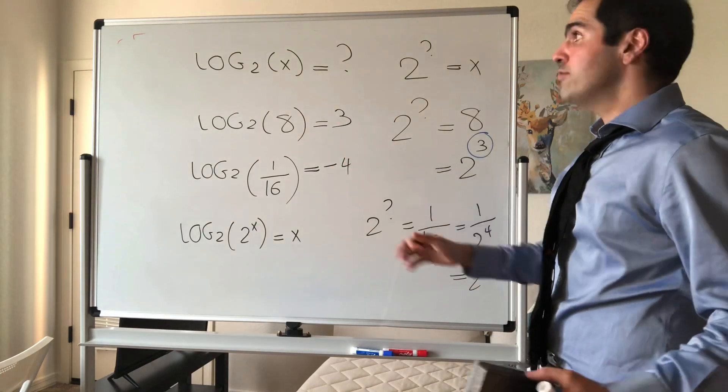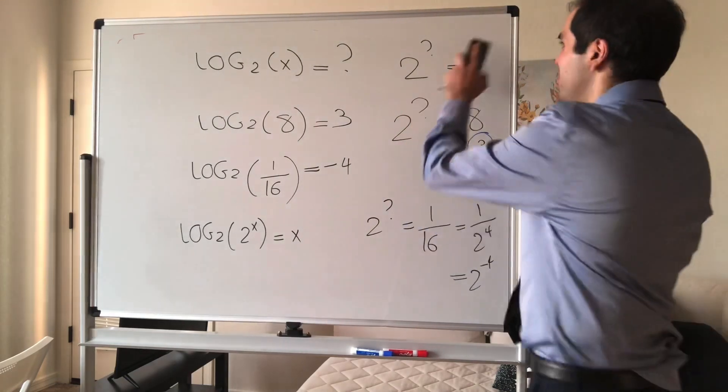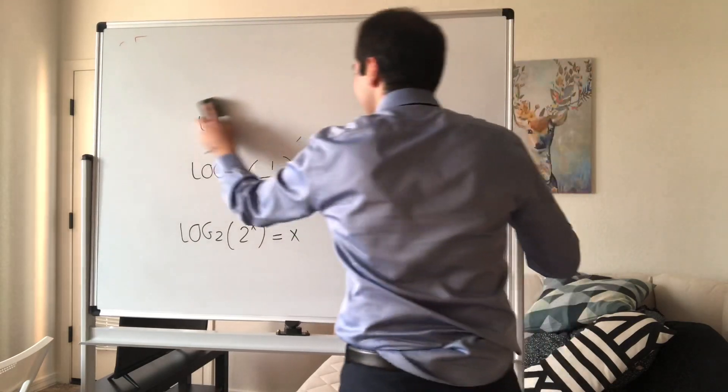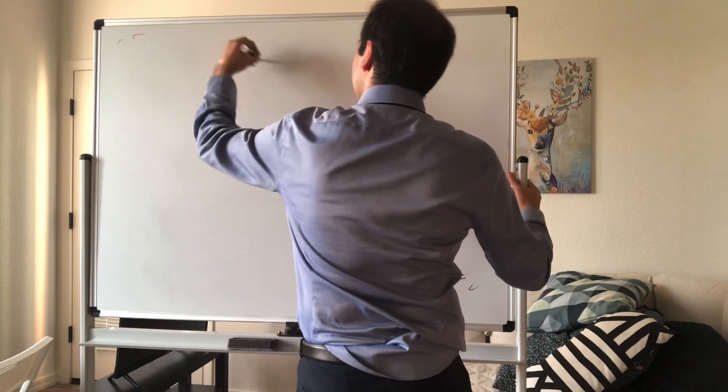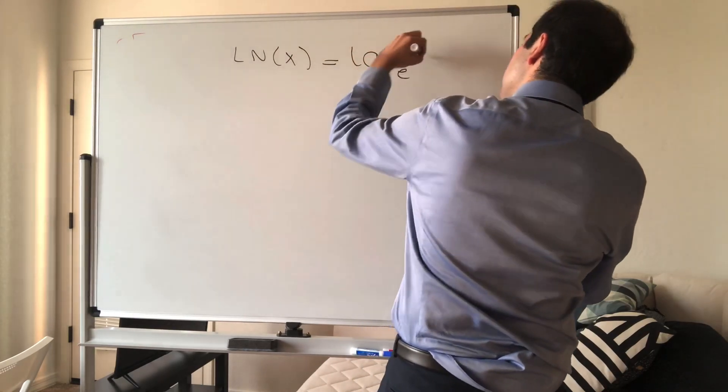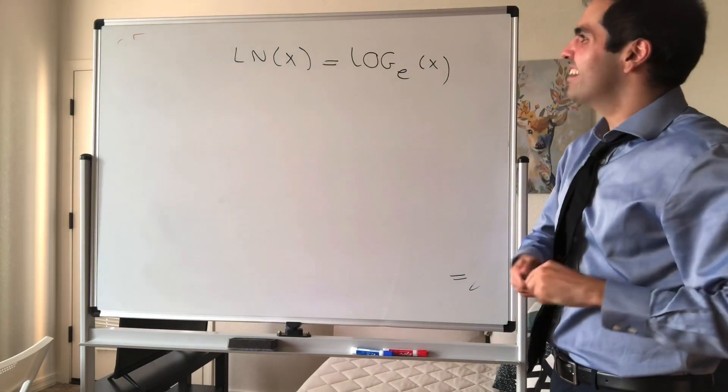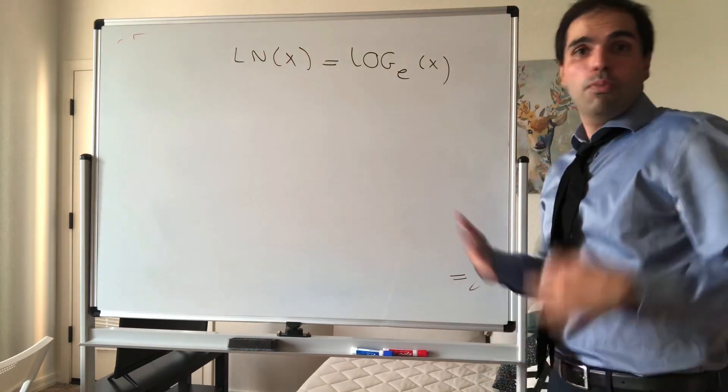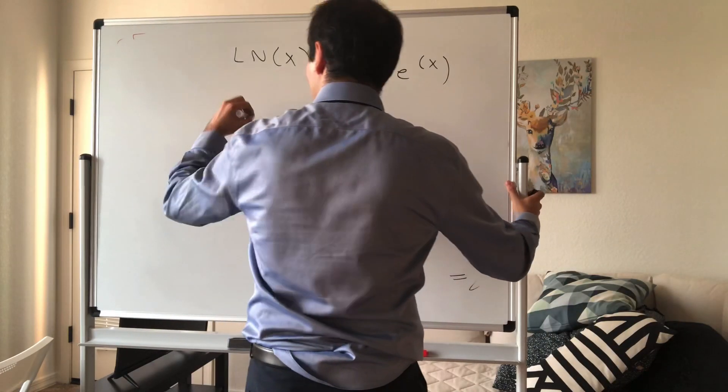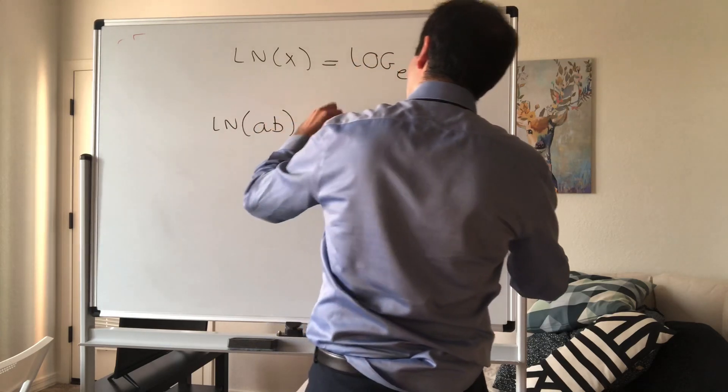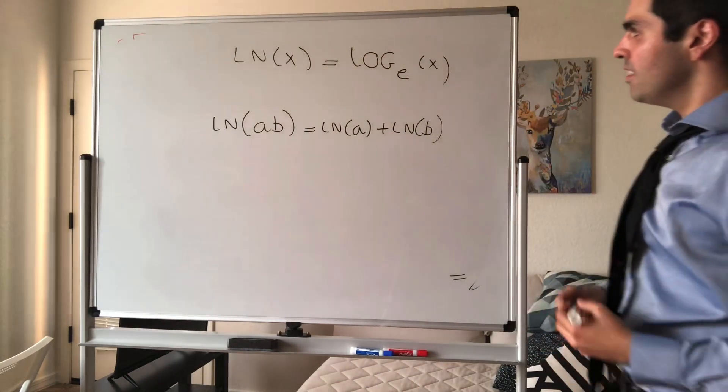The base doesn't really matter. But there is one base that's particularly nice. It's a bit outside the scope of this course, but if you ever take calculus, there's something called ln, like ln the generous, and ln of x is just log base e of x. So e is this wonderful number, the Euler's number, and the properties are exactly the same as for log base 2 or log base 10.